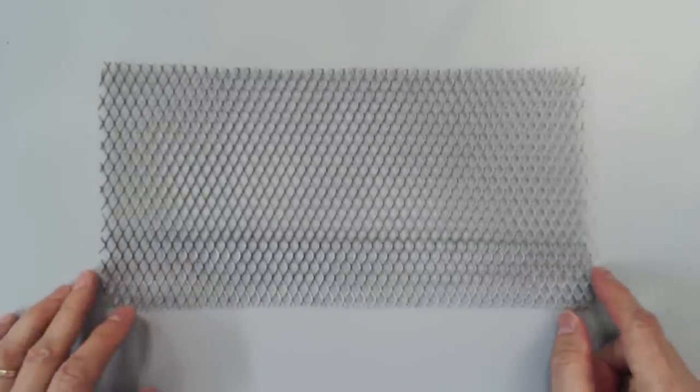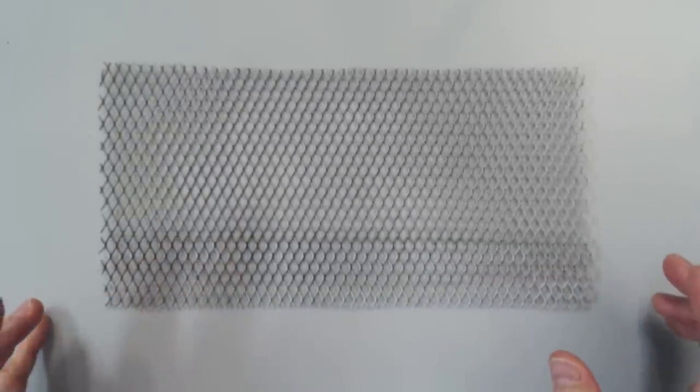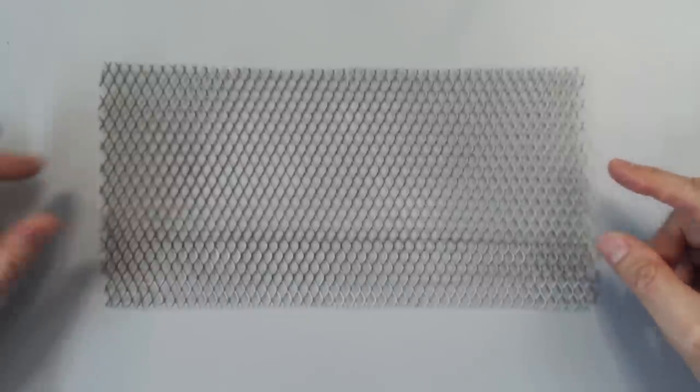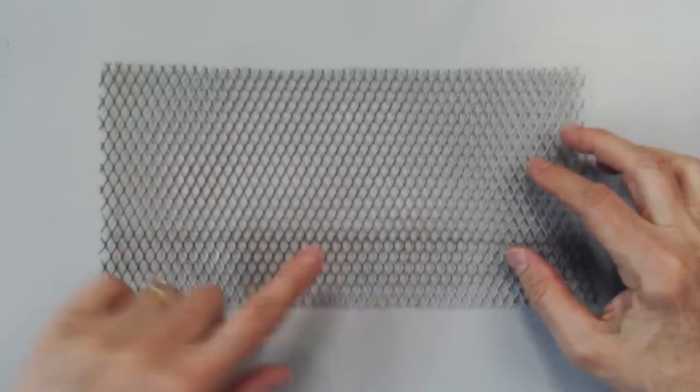And then when you look around outside your house or any other kinds of places, you might find things like this. This is a piece of gutter guard that prevents the leaves from getting down into your gutters. But look at that cool pattern.